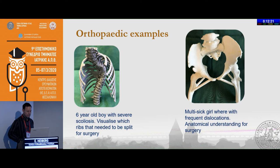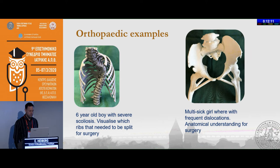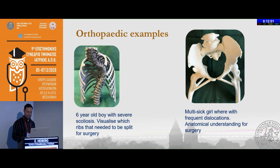Here is another scoliosis case to the left, where the question was how to visualize the ribs that needed to be split before surgery. To the right is a multi-sick girl with frequent dislocations who needed more anatomical understanding before planning surgery.